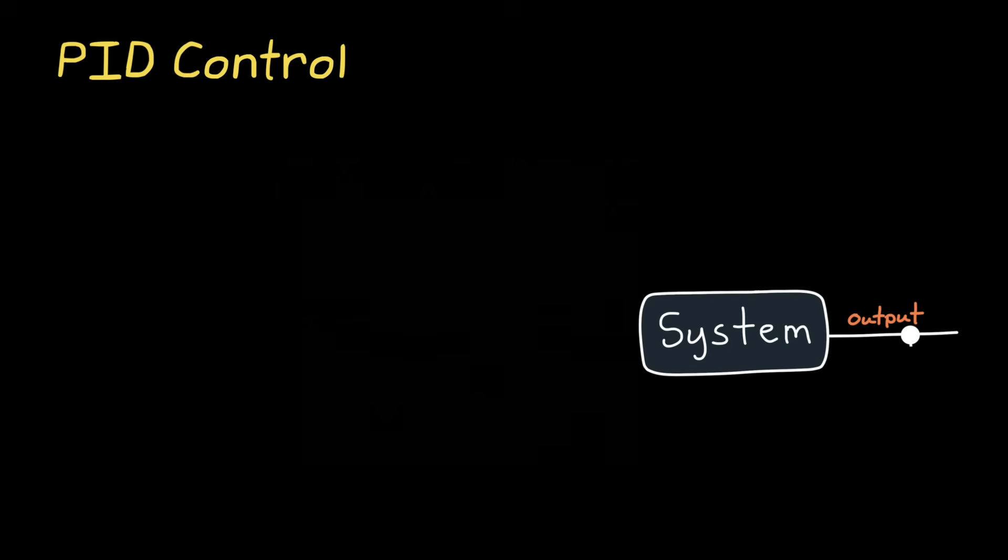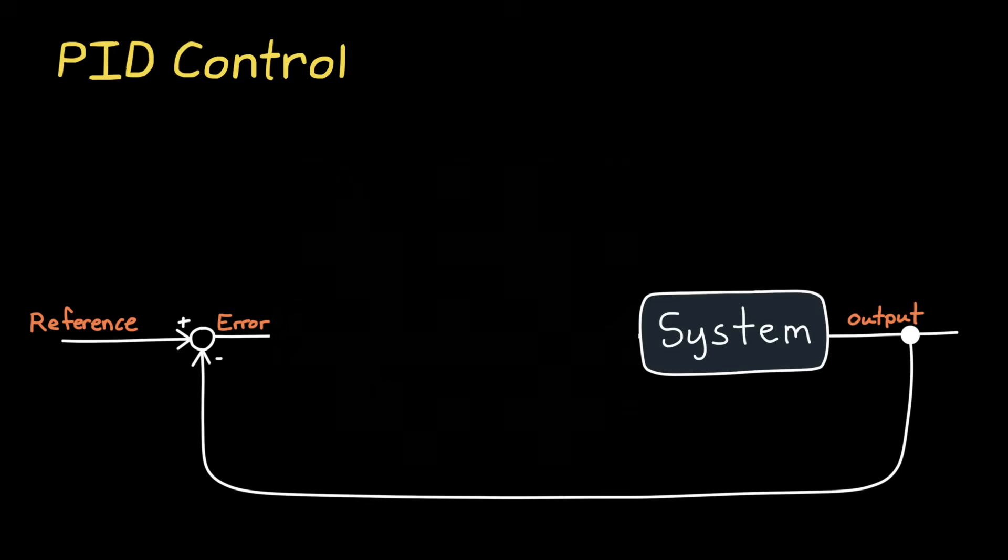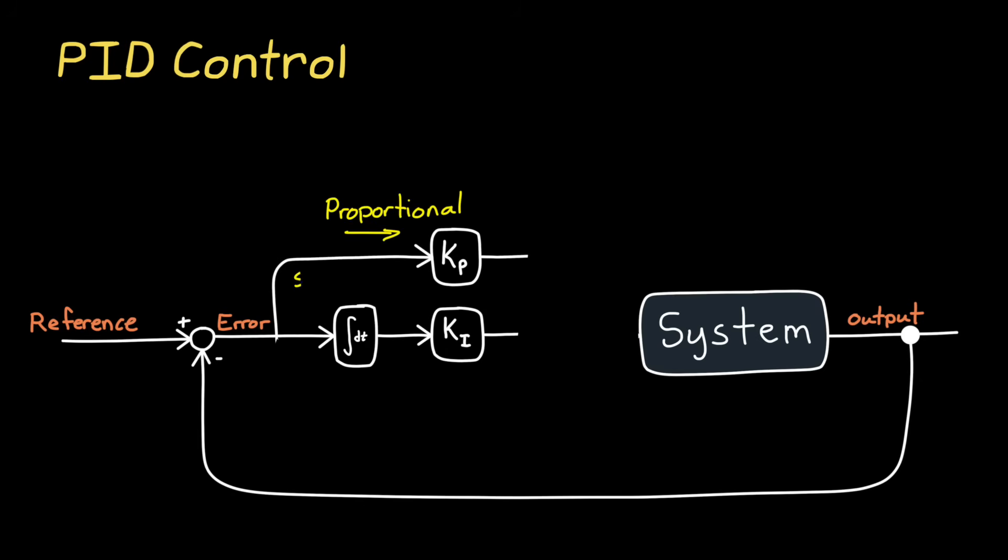I think the first controller that most people think of is PID control. This is where the output of the system is compared to a reference to get the error in the system. And this error is used in three different ways. In one way, it's just scaled by the proportional gain, so the output of the controller is a multiple of the current error. The second path, the error is summed over time through an integrator, and that value is scaled by the integral gain. And then in the third path, we take the rate of change of the error with a derivative, and that output is scaled by the derivative gain. And the summation of all three of these paths produces the total output of the controller, which is the input into the system.